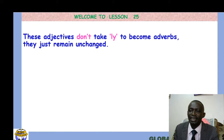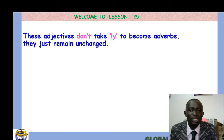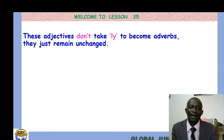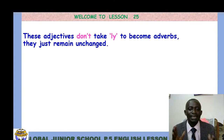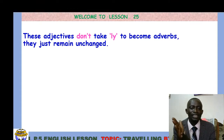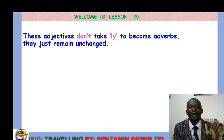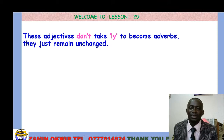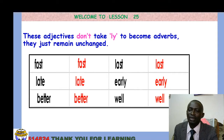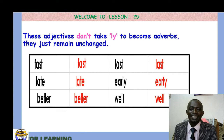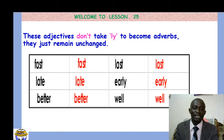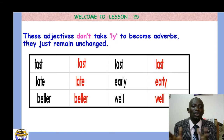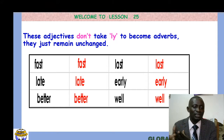The next table has its own guideline: these adjectives don't take '-ly' to become adverbs; they just remain unchanged. Meaning they appear the same way under adjective and the same way under adverb. Words like 'fast', 'late', 'better', 'last', 'early', and 'well' can be used as both adjectives and adverbs. The context of the sentence tells you which role the word is playing.